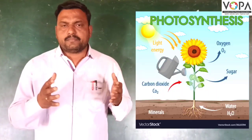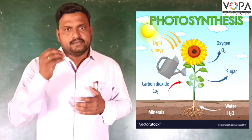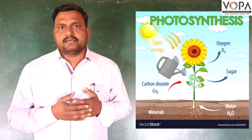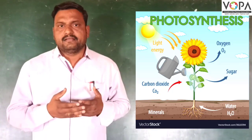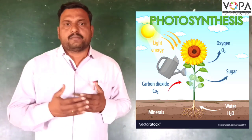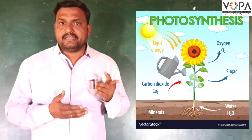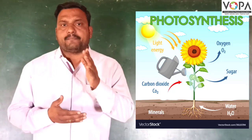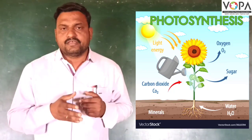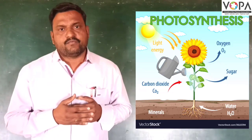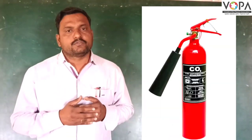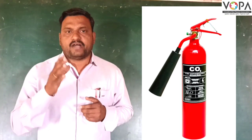Carbon dioxide is needed for plants. As we know, all living beings give out carbon dioxide, and it is utilized by plants in the production of their food. This process is called photosynthesis. Carbon dioxide is also useful in fire extinguishers.